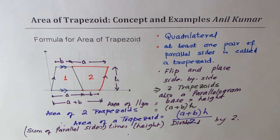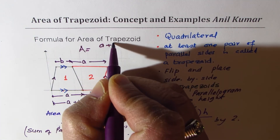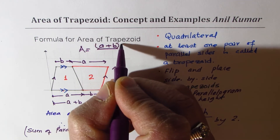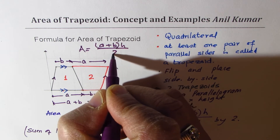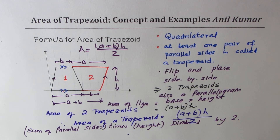So that becomes the formula for area of a trapezoid. Area of trapezoid A equals sum of parallel sides times height, divided by two. So now we are going to use this formula to find the area of trapezoids. I hope the concept is absolutely clear. We'll use this concept once again to explain, and then take a few examples. Let's take up the next part.